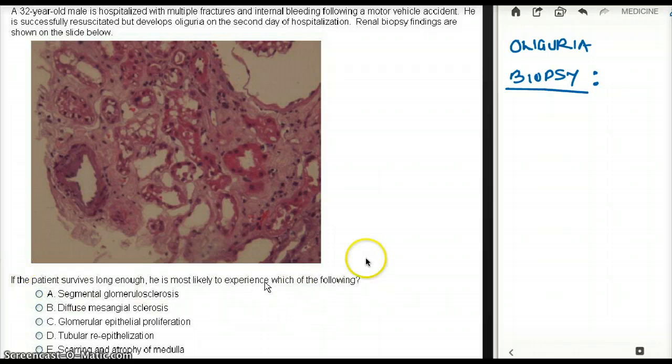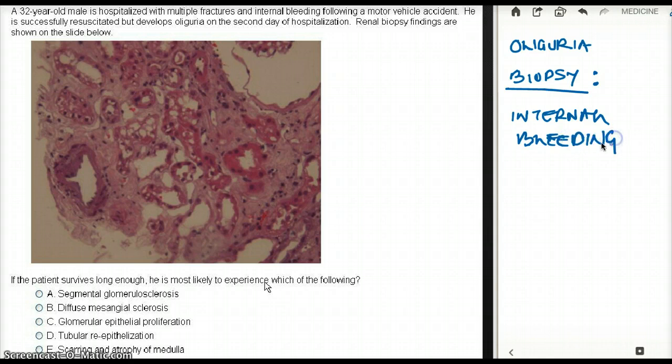What do we see in renal biopsy? Honestly, in biopsy, I can see bleeding. That's really all I can see. There is a lot of bleeding. So I would say internal bleeding on biopsy. Because he also got into an accident, which confirms my theory about internal bleeding.